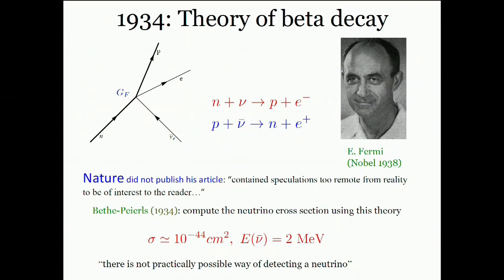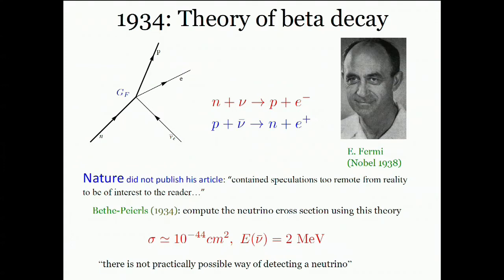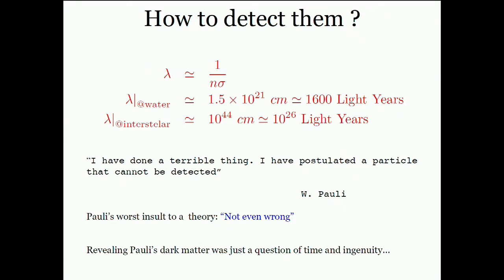Beta decay goes through a four-fermion interaction, which implies that neutrinos should interact with matter at some level. It's interesting to recall that Nature Journal did not publish Fermi's article on the basis that it contained speculations too remote from reality to be of interest to the reader. Those were the good old times where papers had to be of interest to readers.